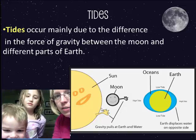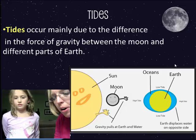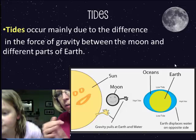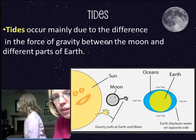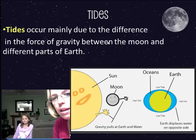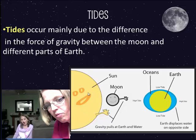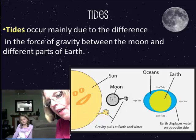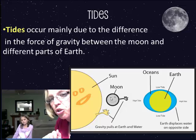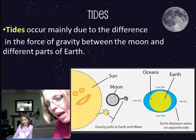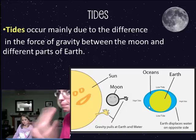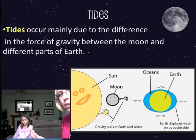Tides are part of the ocean — they're not necessarily the same as waves or a river flowing. Tides occur mainly due to the difference in force of gravity between the moon and parts of the earth. Both the sun and moon have gravity, and their gravitational pull pulls the water from our earth, causing it to bulge out a little bit, creating tides. Since our earth is spinning, different parts of the earth are facing those two things at different times of the day, so it's a very predictable cycle.